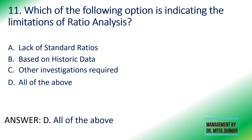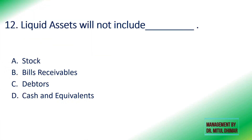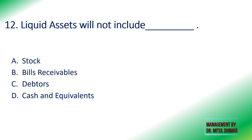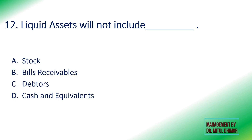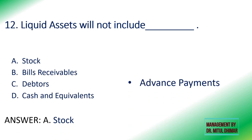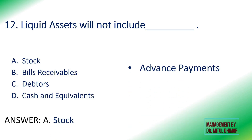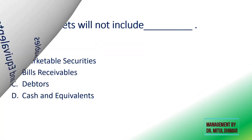Twelfth: which will NOT be included in liquid assets — stock, bills receivable, debtors, or cash and equivalents? The answer is stock. Stock is not a liquid asset, along with expenditure paid in advance.